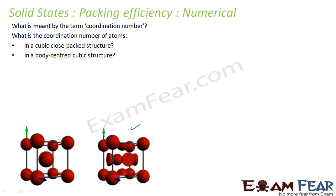And what is the coordination number in case of cubic close-packed structure and body-centered? This is my cubic close-packed, this is body-centered. So we know that in cubic close-packed structure, we have coordination number 12, and here we have coordination number 8. If you take this atom, 1, 2, 3, 4, 5, 6, 7, 8 are touching it.